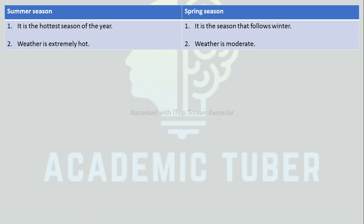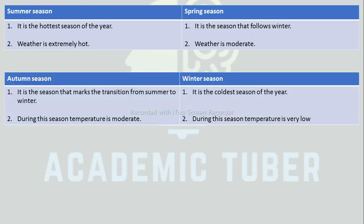Difference between summer season and spring season: Summer season is the hottest season of the year, whereas spring is the season that follows winter. In summer the weather is extremely hot, whereas in spring the weather is moderate. Difference between autumn season and winter season: Autumn is the season that marks the transition from summer to winter, whereas winter is the coldest season of the year. During autumn the temperature is moderate, while during winter the temperature is very low.